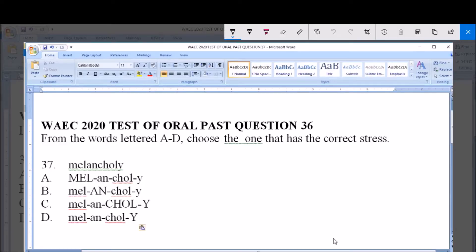Welcome, this is WAEC 2020 English Test of Oral Past Question, question number 37. The instruction here says that we should look out for the word option that takes the stress of the given word, and the given word here is pronounced as melancholy, melancholy.